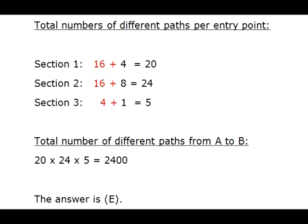After multiplying the total numbers of all three sections, we get the total number of different paths from point A to point B. It's equal to 2,400. The answer is E.